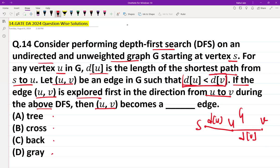d[U] is less than d[V], and the edge (U, V) is explored first in the direction from U to V. This edge is explored first from the direction U to V in this direction. So which edge is it?